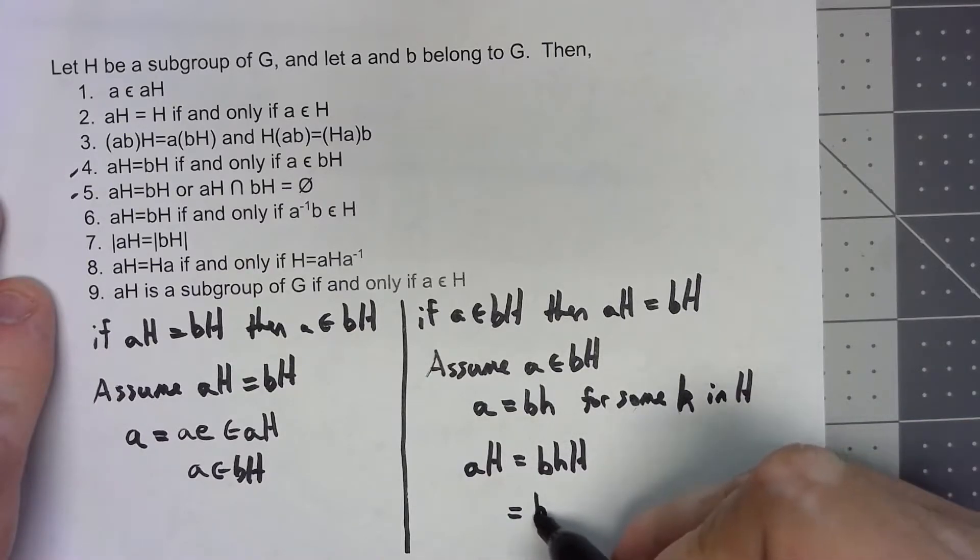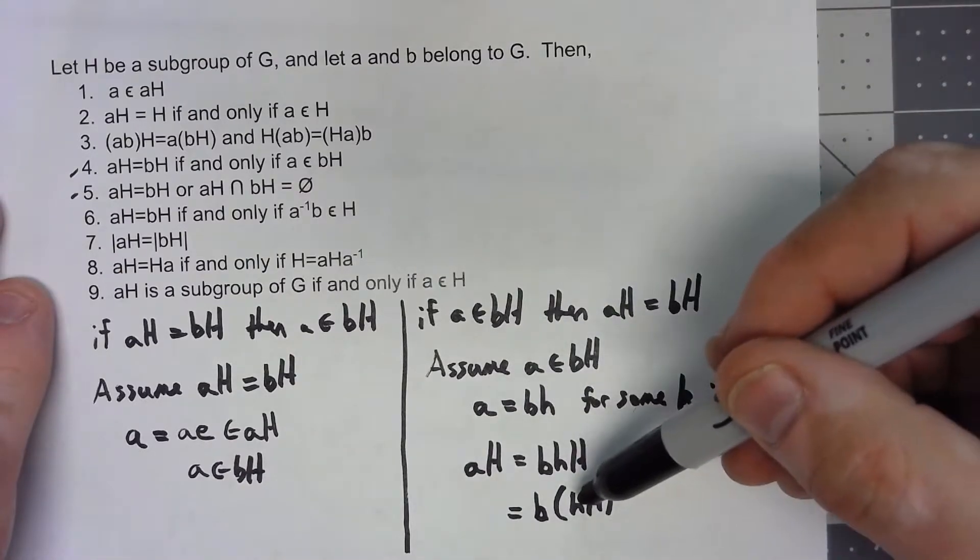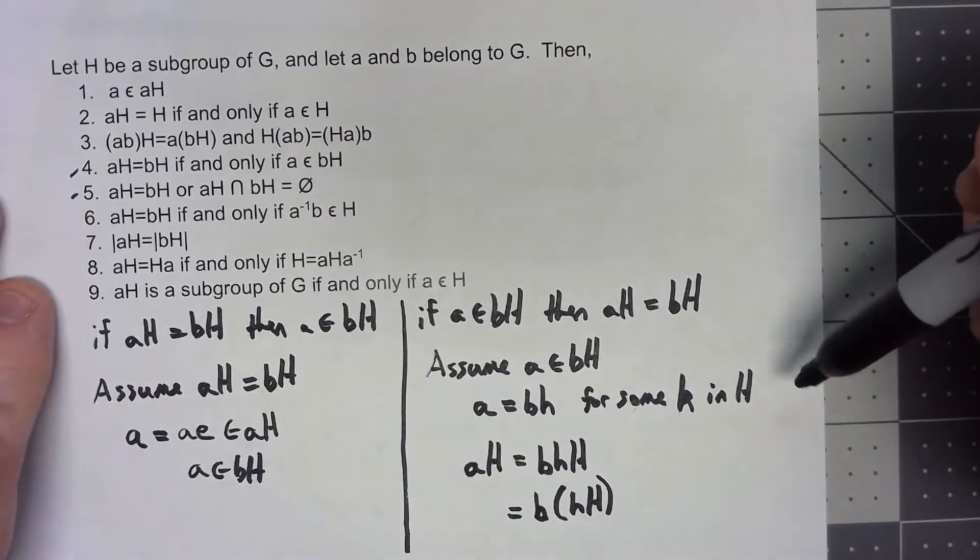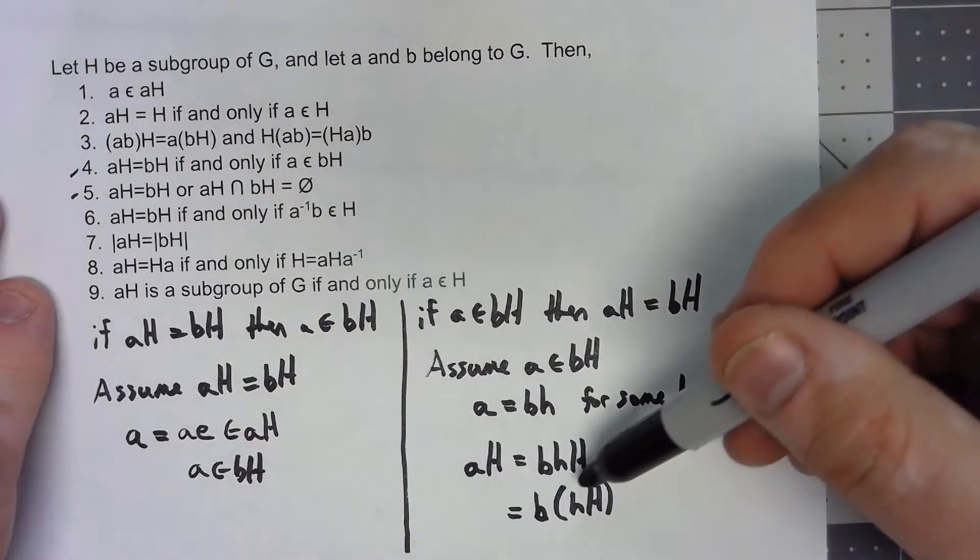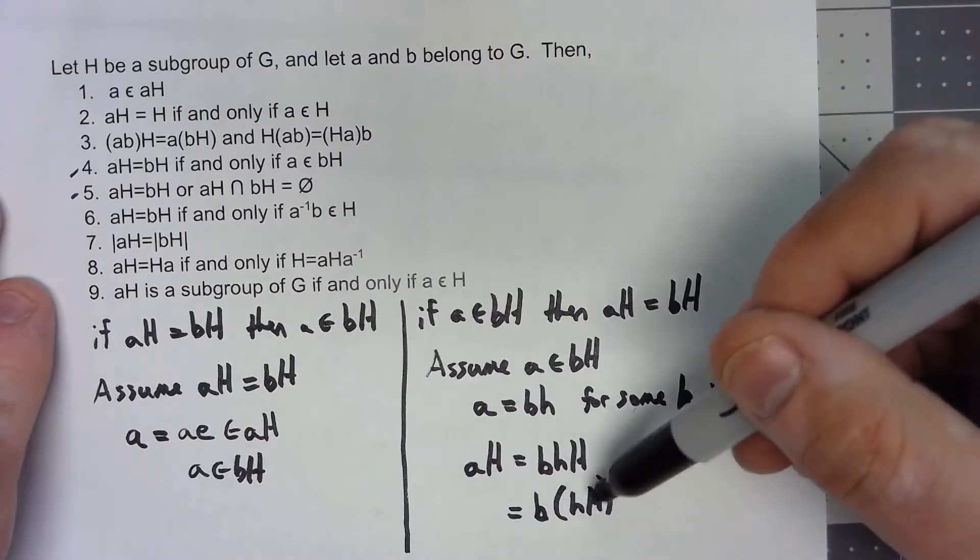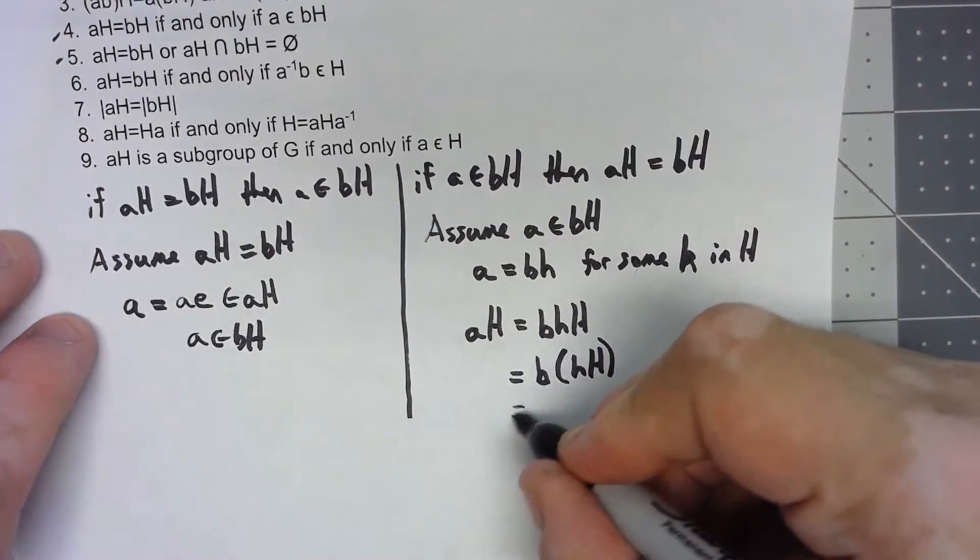But let's think about it this way. We've got B times HH, and notice again H is in H and H is a subgroup. So if we think about our properties of groups, that must mean that that coset HH has to be just H.